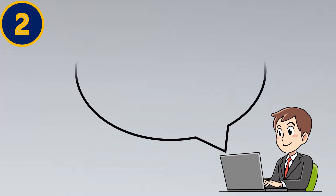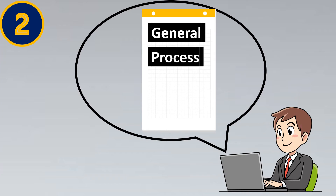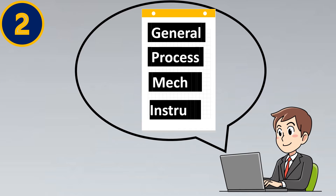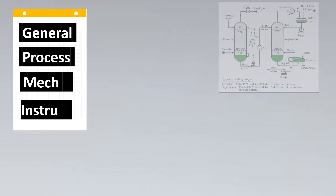The second step is to divide the data sheet. We'll divide our data sheet into four parts: the general part, process, mechanical, and instrumentation part. First, we look into the general part.